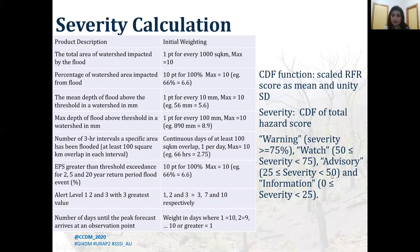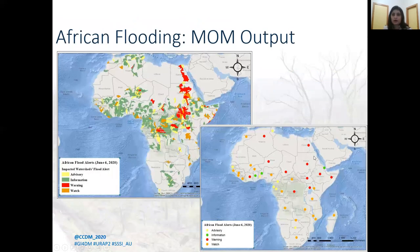Flood alerts for affected watersheds are then created based on the severity score. For example, if severity is greater than 75%, a warning alert is created. If severity is between 50 and 75, a watch is issued; between 25 and 50, an advisory; and so on. This map shows the model results for the African flood on June 6, 2020, where red, orange, yellow, and green watersheds have warning, watch, advisory, and information flood alerts respectively.